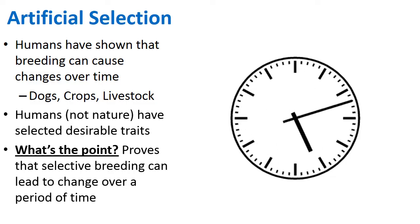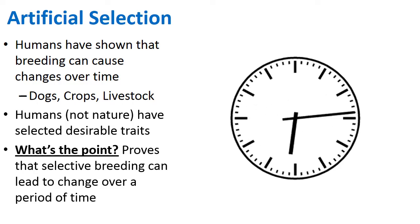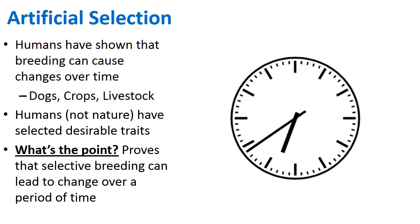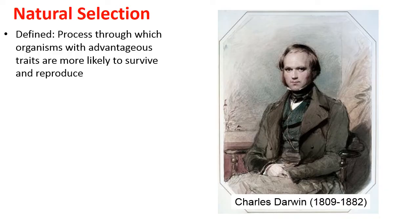The question is: can this process of change happen naturally without human interference? Science believes the answer is yes — and that would be natural selection: the process through which organisms with advantageous traits are more likely to survive and reproduce.